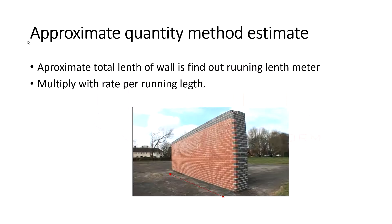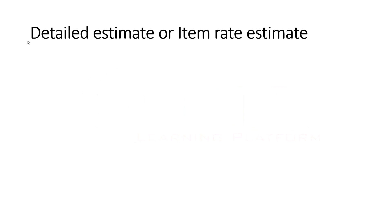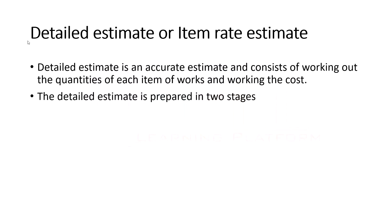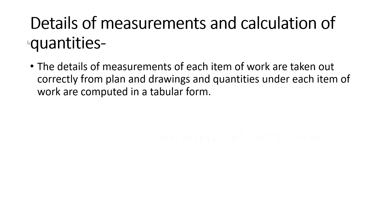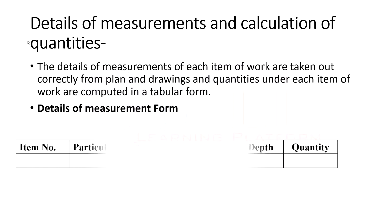The detail estimate, or item rate estimate, is an accurate estimate. It consists of working out the quantities of each item of work and calculating the cost. The detail estimate has two stages: stage one is the detail of measurement form, and stage two is the abstract of estimate form. The detailed measurements of each item of work are taken correctly from plans and drawings, and quantities under each item are computed in a tabular form.